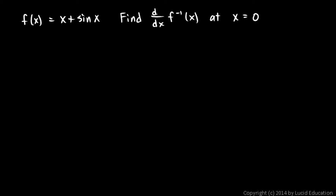Here we're told that f of x is x plus sin x, and we're told to find the derivative of f inverse at x equals 0. And this is actually really easy.